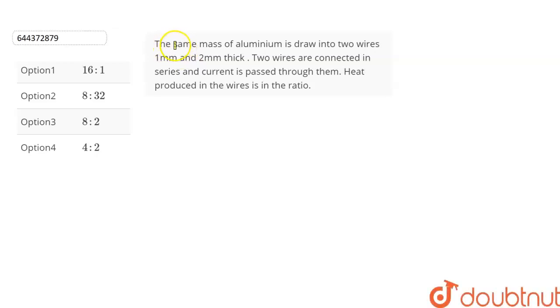The question is: the same mass of aluminium is drawn into two wires, 1mm and 2mm thick. The two wires are connected in series and a current is passed through them. We have to find the ratio of heat produced in both of them. We are given four options from which we have to choose the correct option.